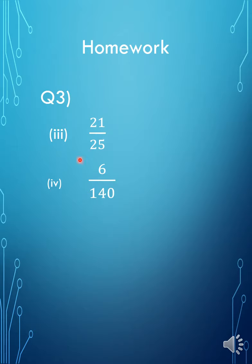The numbers given were 21 over 25 and 6 over 140. What you have to do is take these rational numbers and convert them into decimals, and then tell if it is terminating or non-terminating. So I'll show you the homework — kindly check with your numbers.